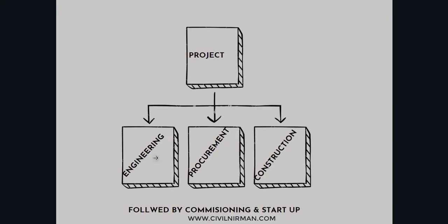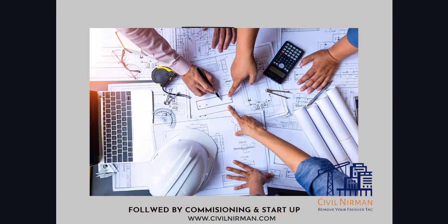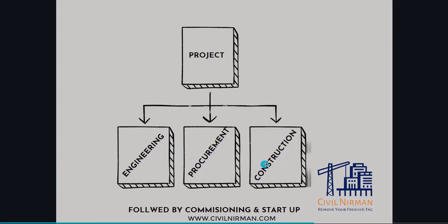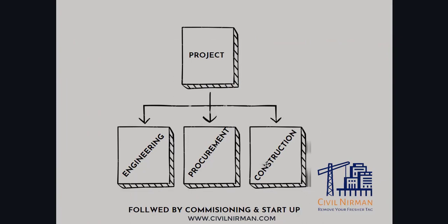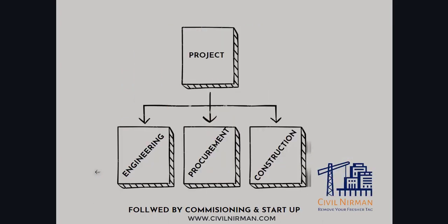Execution of a project for an industrial facility consists of three main activities. First is engineering, second is procurement, and the third is construction, which are followed by commissioning and startup. Engineering designs the facility, produces the list, specifications, and data sheets of all the equipment and materials, and issues all the drawings required to erect a particular plant.